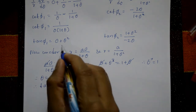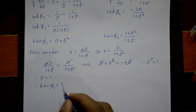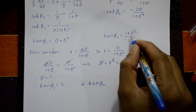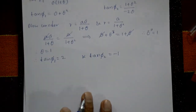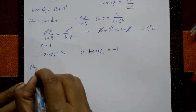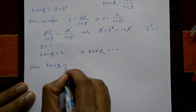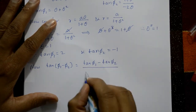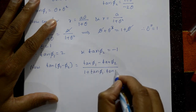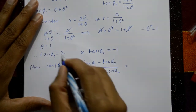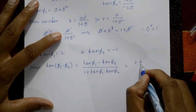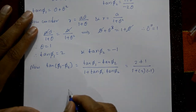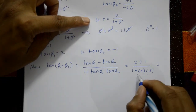Using θ = 1: tanφ₁ = 1·(1+1) = 2. And tanφ₂ = (1+1)/(−2·1) = 2/(−2) = −1. Now tan(φ₁ − φ₂) = (tanφ₁ − tanφ₂)/(1 + tanφ₁·tanφ₂) = (2−(−1))/(1 + 2·(−1)) = 3/(1−2) = 3/(−1) = −3.